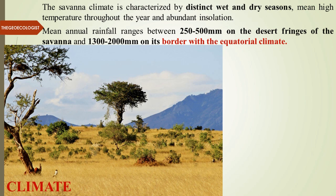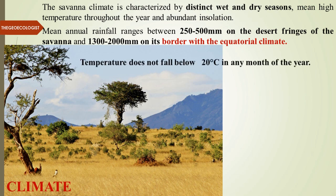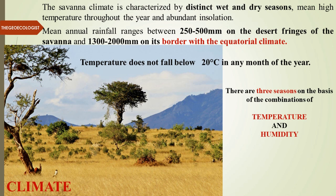When located between 10 to 20 degrees north and south of the equator, at about 20 degrees it is closer to the Tropic of Cancer or Capricorn, with more subtropical conditions, while at 10 degrees it is closer to the equatorial zone. Temperature does not fall below 20 degrees Celsius in any month of the year. There are three seasons based on the combination of temperature and humidity.